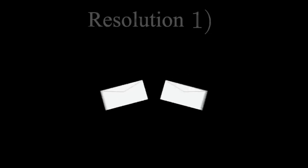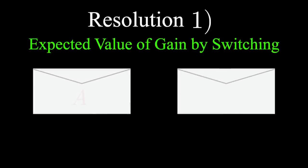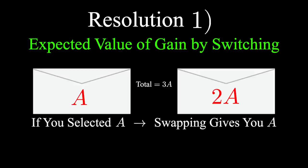Here's a few ways of looking at the problem that attempt to resolve this mathematical paradox. If one envelope contains an amount a and the other contains twice as much, 2a, the total amount in both envelopes is a plus 2a or 3a. If you selected the envelope with the amount a first, you gain the amount a by swapping. You're trading a for 2a, so you've gained an additional a.